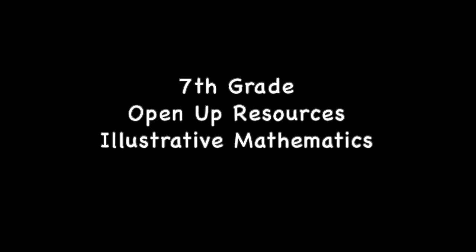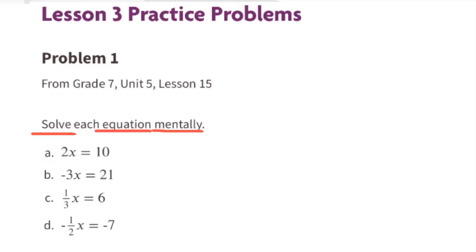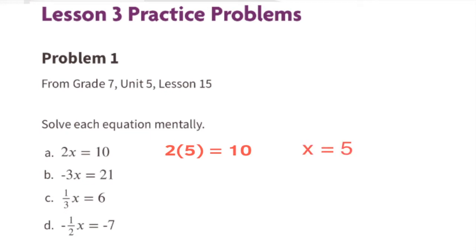7th grade Open Up Resources Illustrative Mathematics, Unit 6 Lesson 3: Reasoning About Contexts with Tape Diagrams, Part 2. Problem number 1 from 7th grade Unit 5 Lesson 15: solve each equation mentally. A: 2 times x equals 10. Since 10 divided by 2 equals 5, I know that 2 times 5 equals 10, so x equals 5.